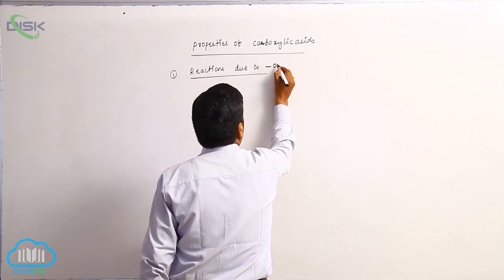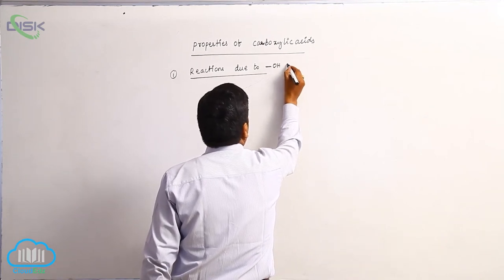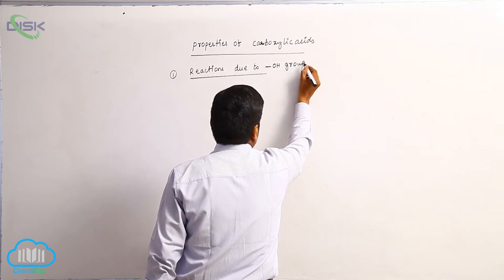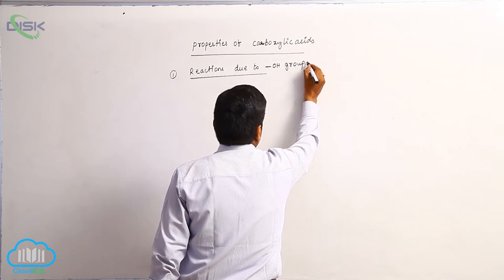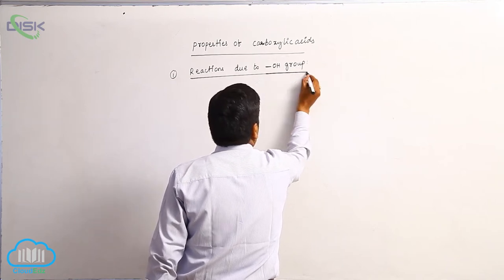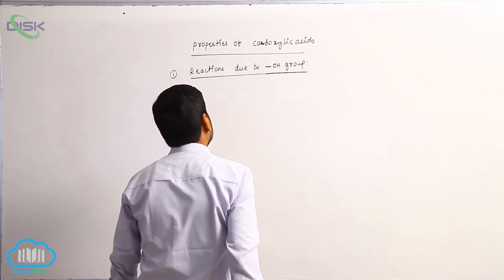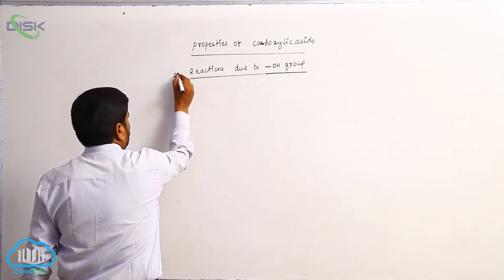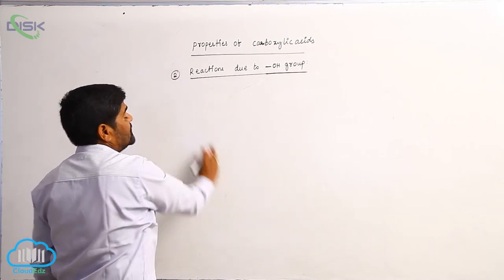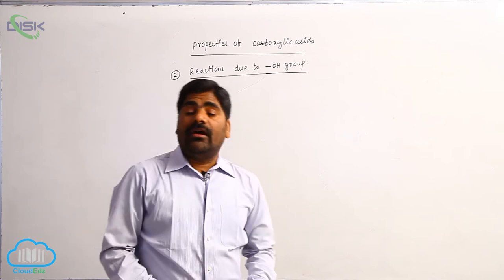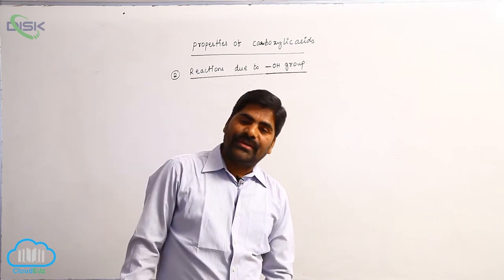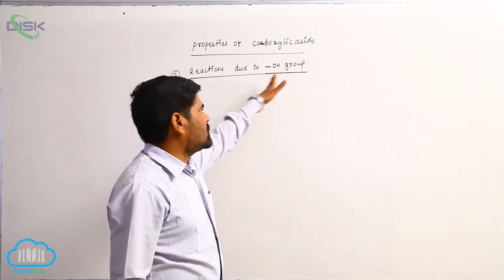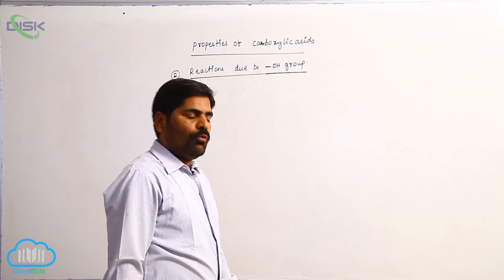Reactions of carboxylic acids are classified into two categories: reactions due to acidic hydrogen, and reactions due to the OH group.